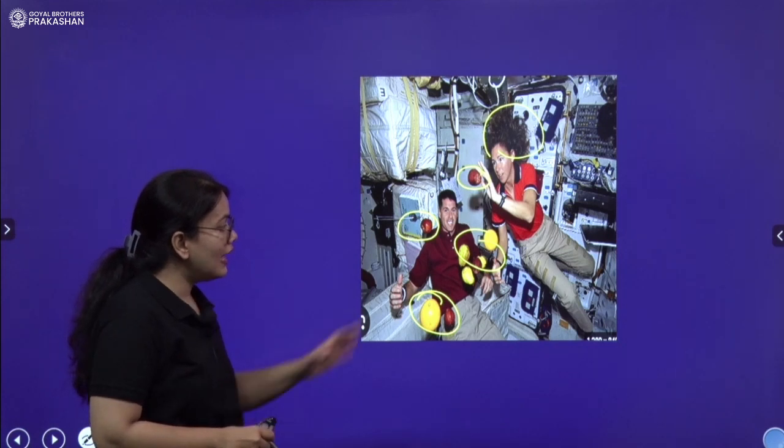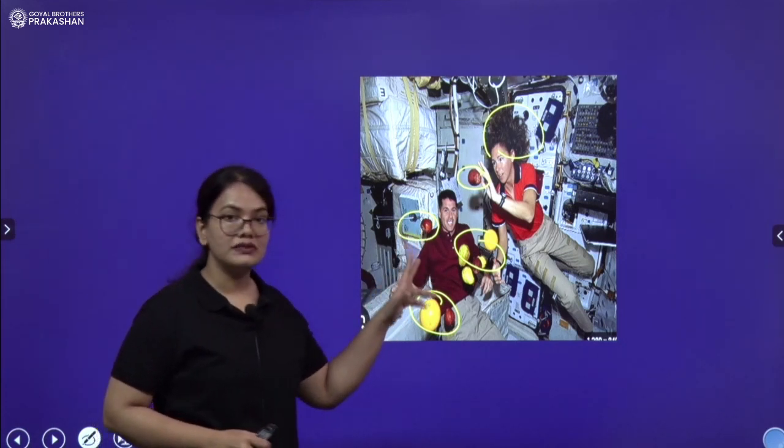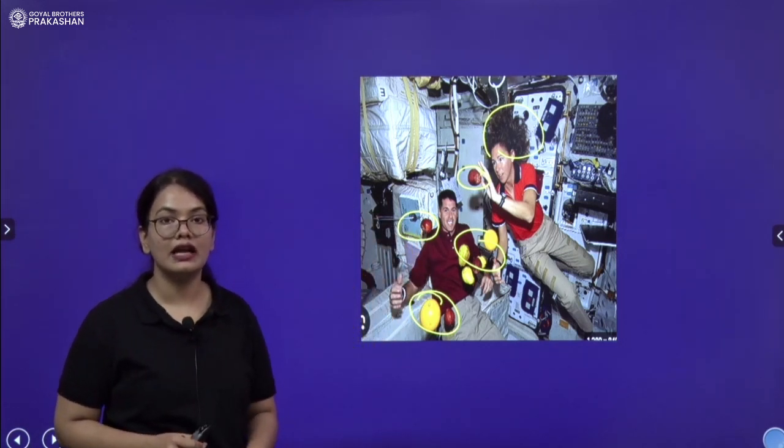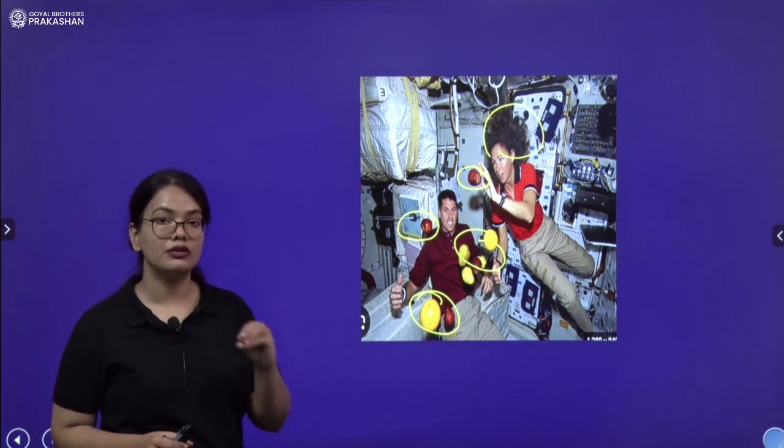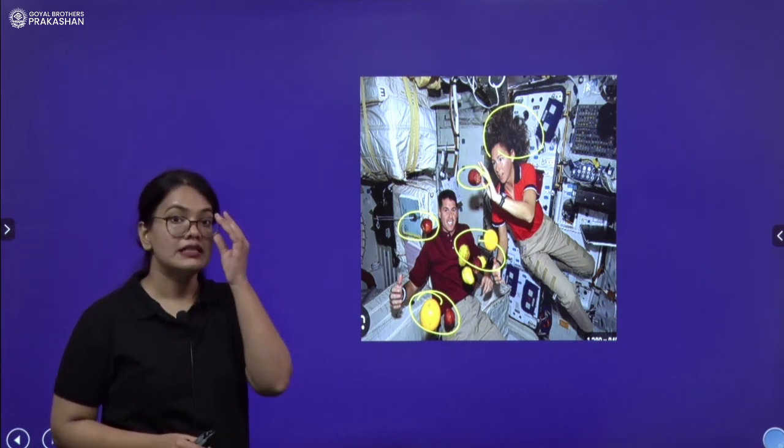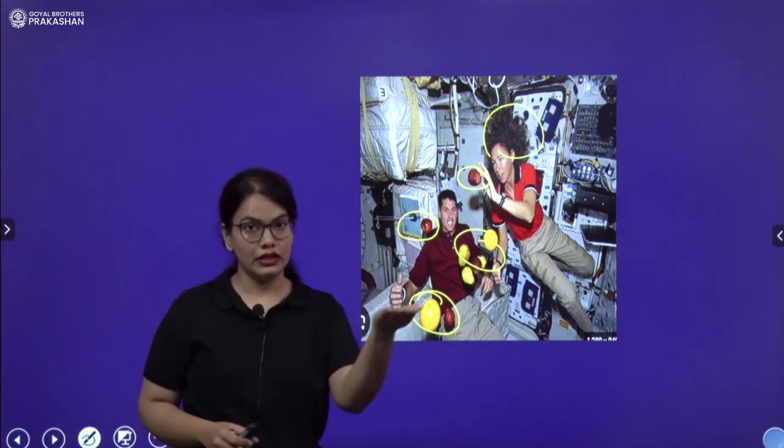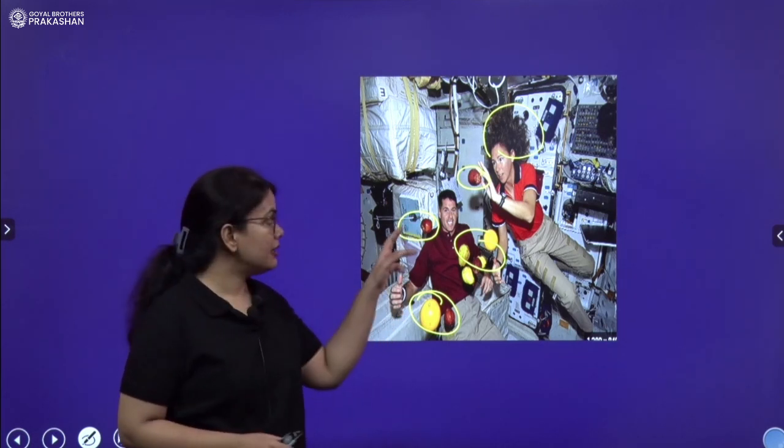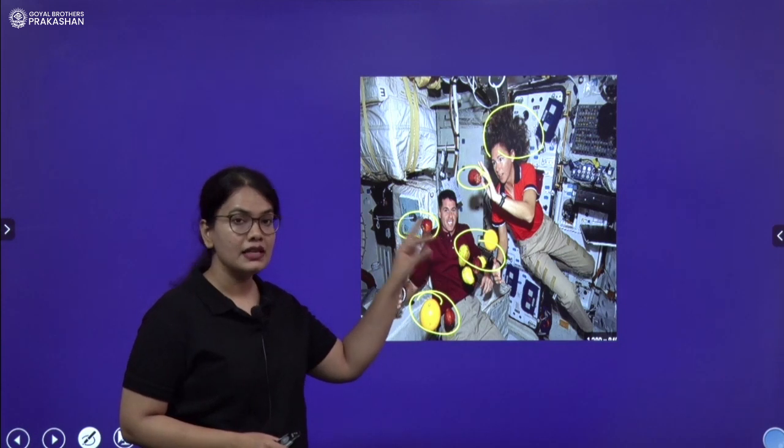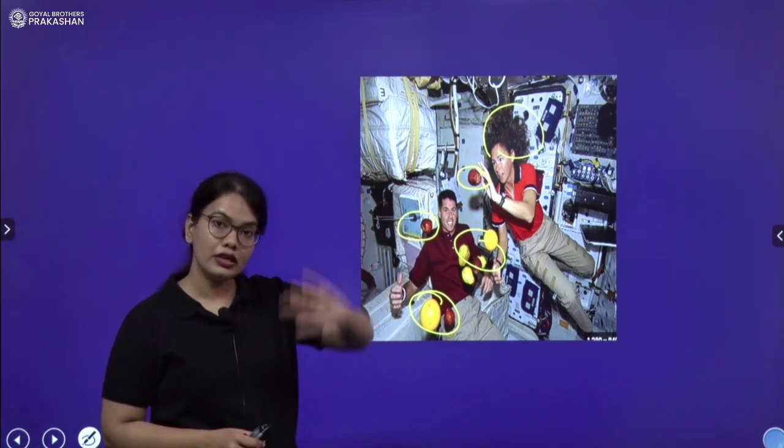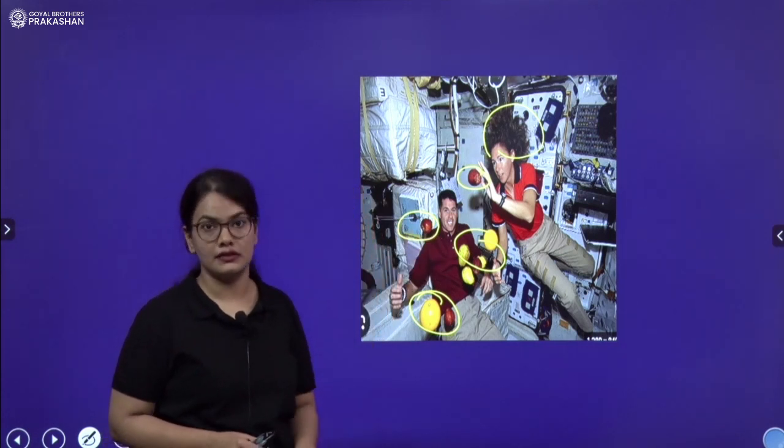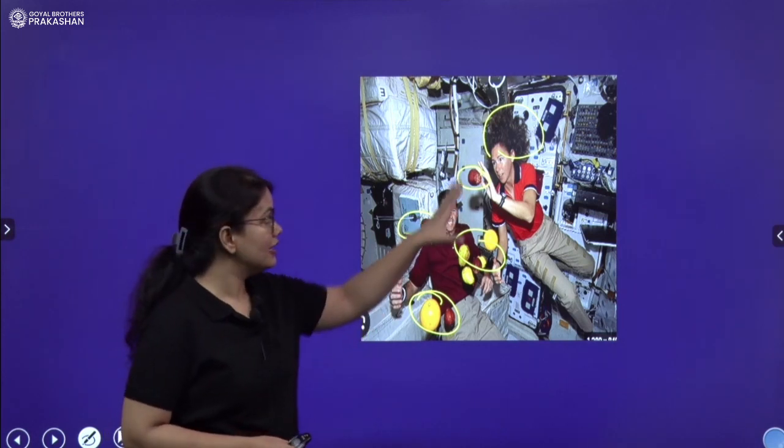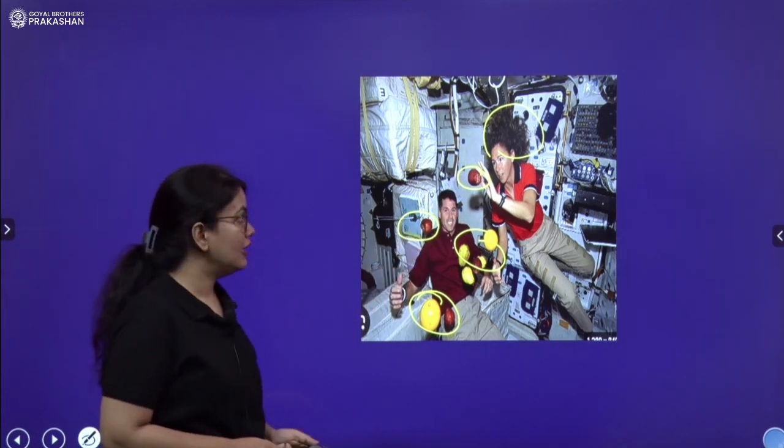So, in the absence of gravity, the objects are not on the ground or able to stay on the surface. Suppose you take this apple. If you put it on the table, it will stay there. But an apple in the space will be there, it will not come down, it will not stick to the surface. It will fly, people will fly over there.